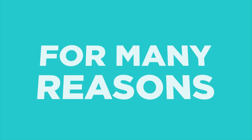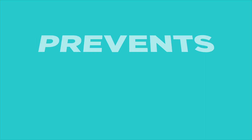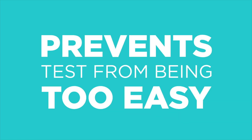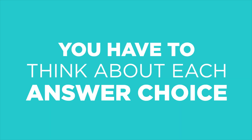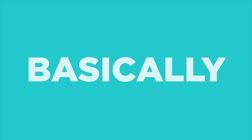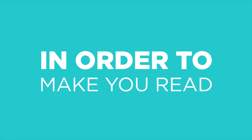They do this for many reasons. First, they don't want to make this test too easy. If the answer is obvious, everyone will just pick the right answer and not even read the other answer choices. So by obscuring the answer choices, you're forced to think critically about each one. It also makes you stick to the passage to find the best answer, and in order to stick to the passage, you have to read it. Basically, in order to make you read the passage, they make the answer choices less than stellar.